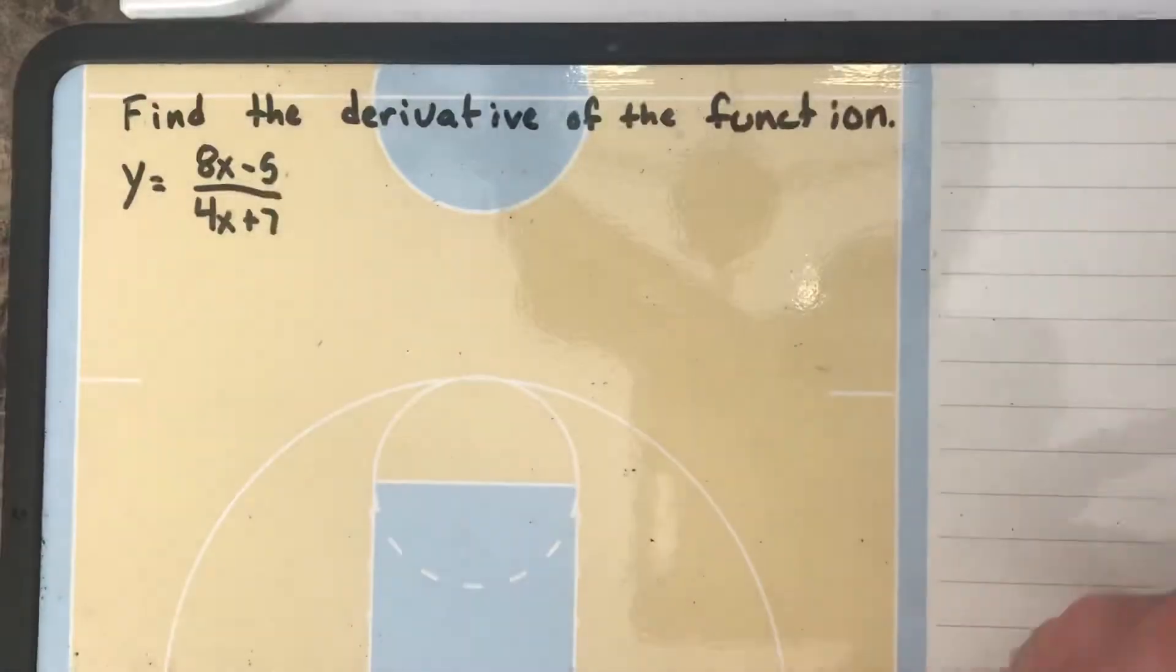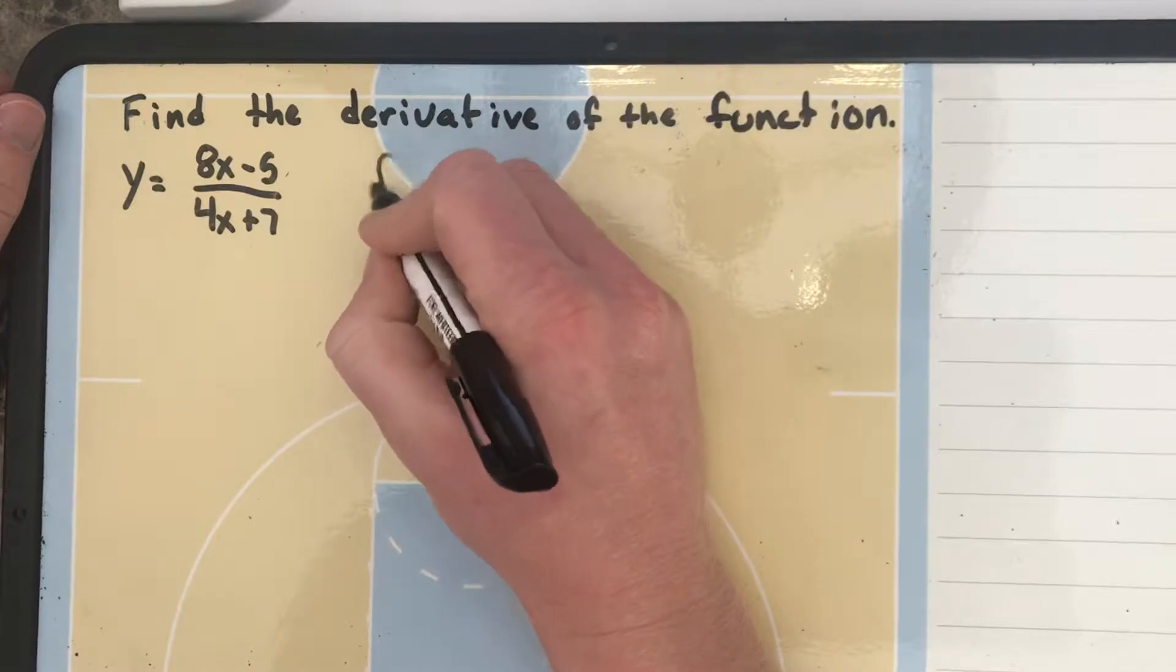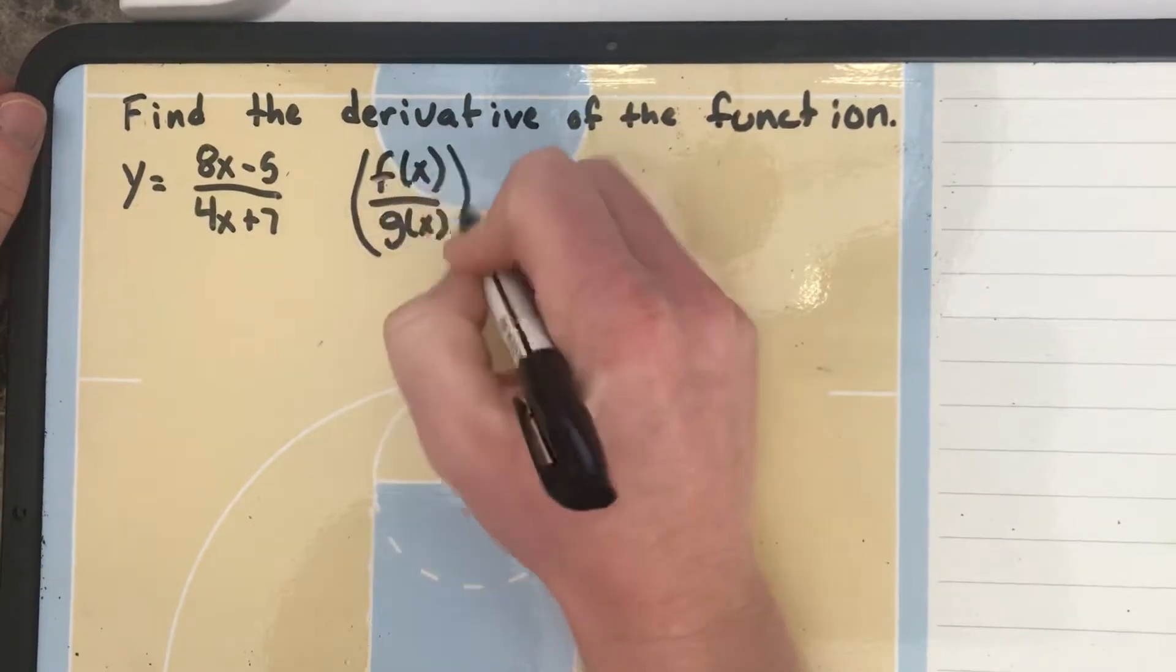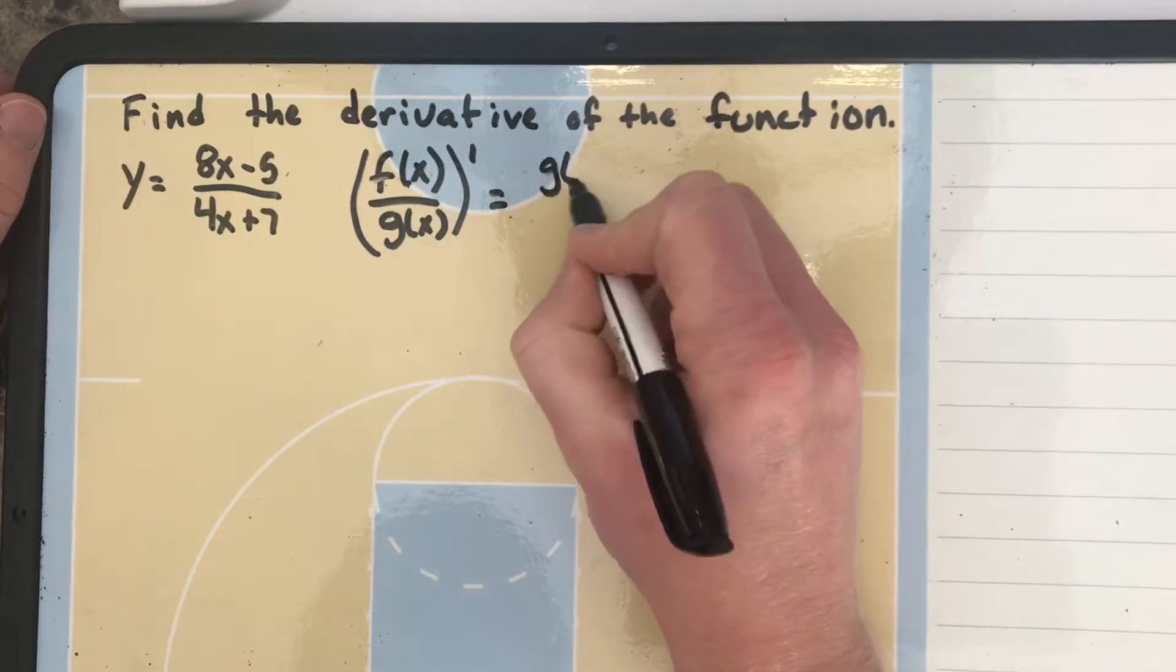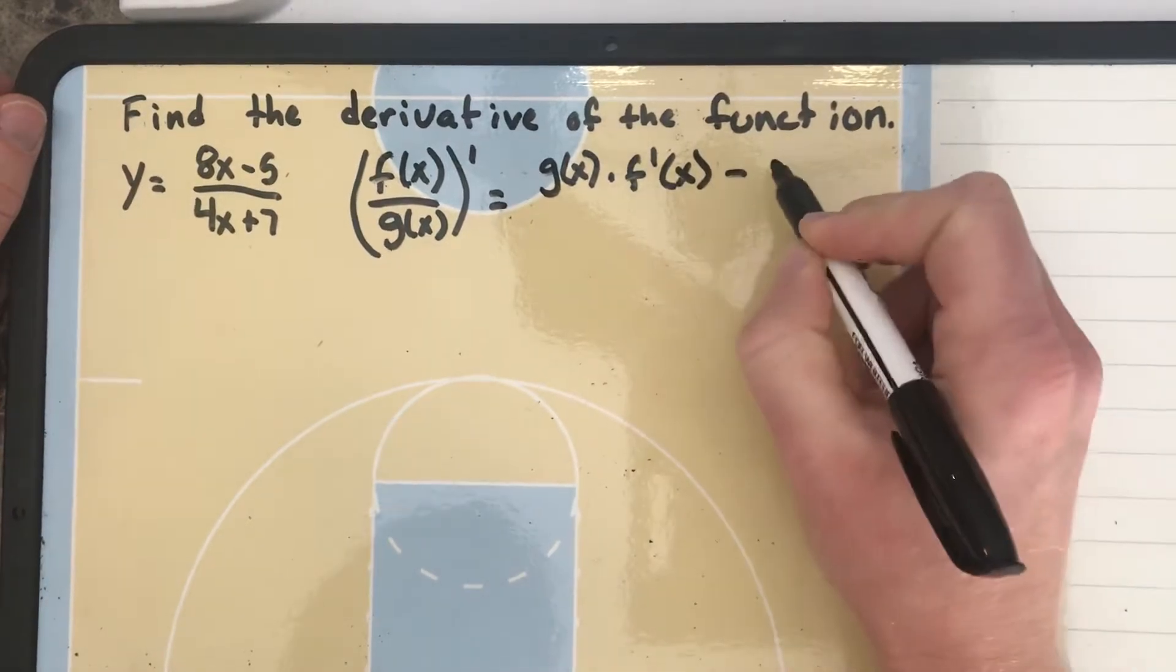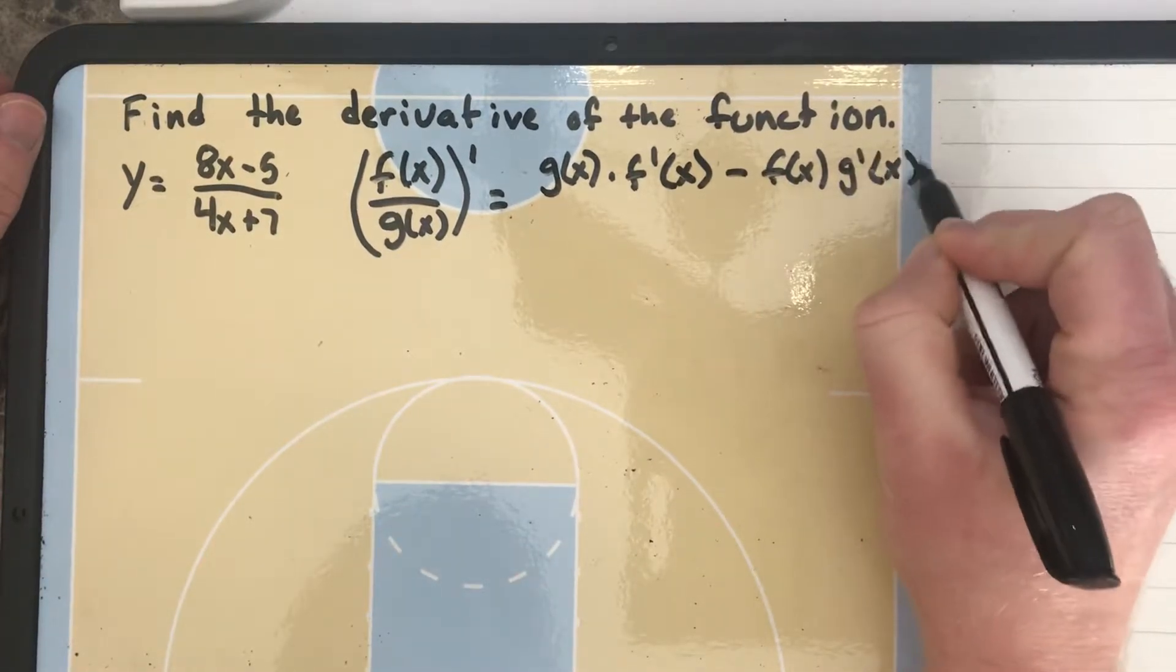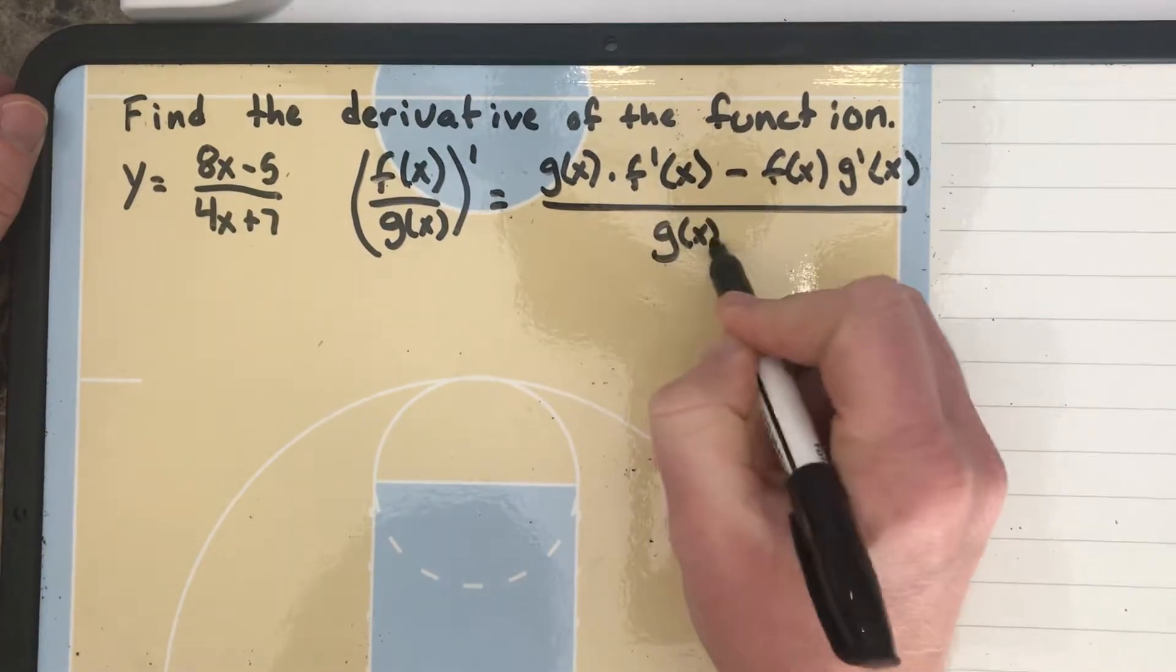So let's write all that out. So I know that for the quotient rule, if I have f of x over g of x and I want to take the derivative, I'm going to get g of x times f prime of x minus f of x g prime of x all over g of x squared.